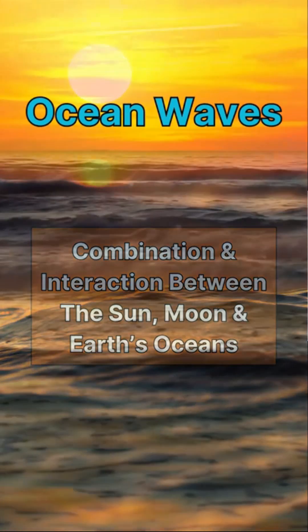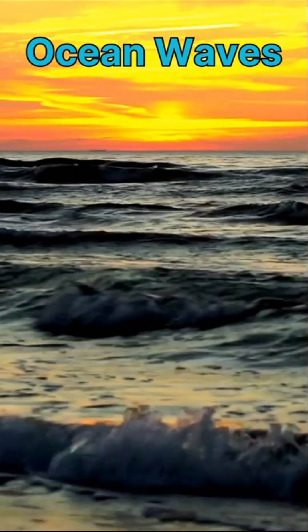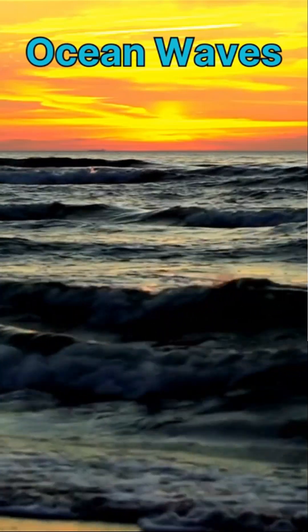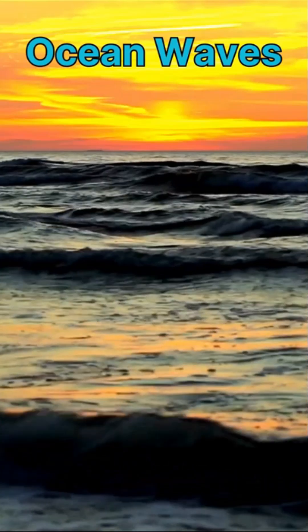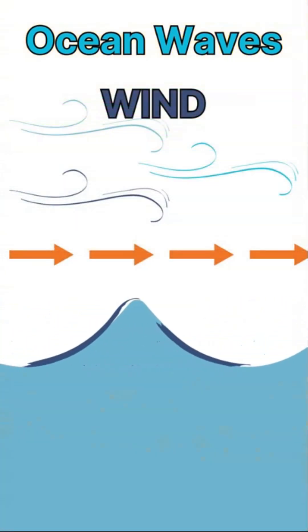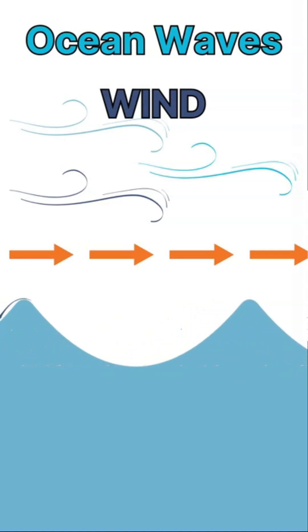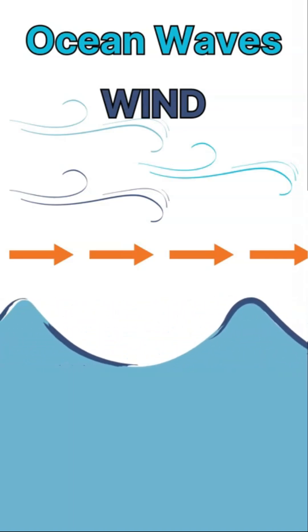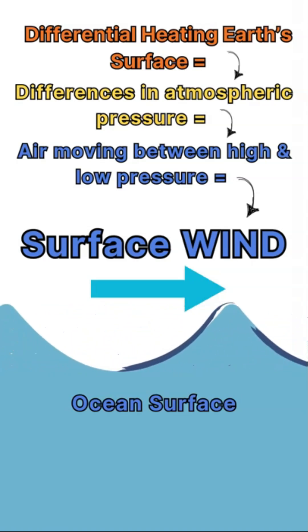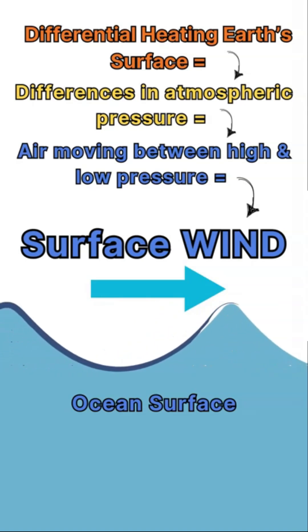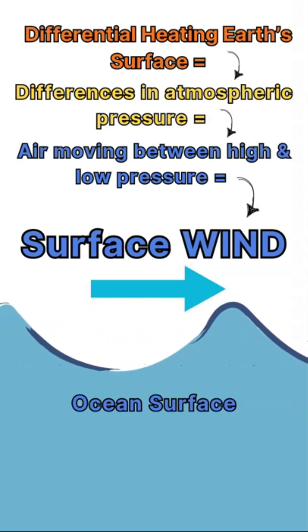These forces are combining to create our dynamic ocean. The ocean surface waves are most commonly formed through wind. Wind is the movement of air across the Earth's surface, caused by a difference in air pressure, which is caused by a difference in temperature, called differential heating. This wind moves across the surface of the ocean and causes drag and friction, which causes waves to form.